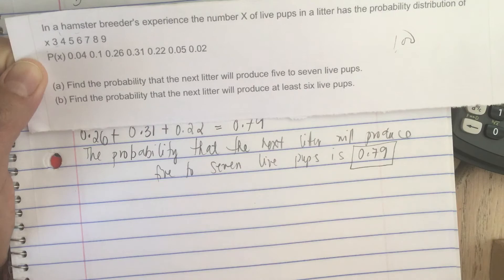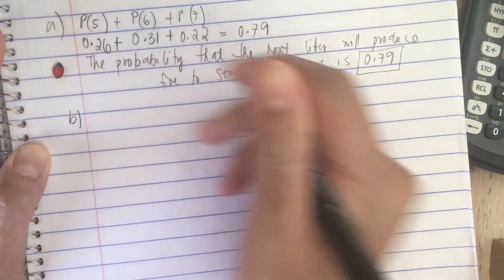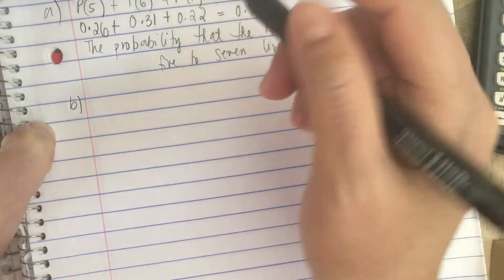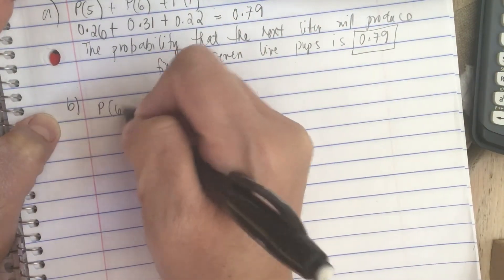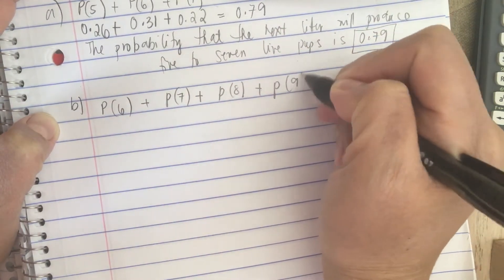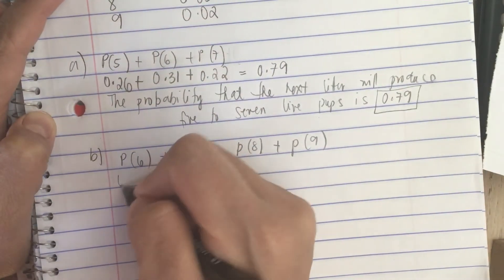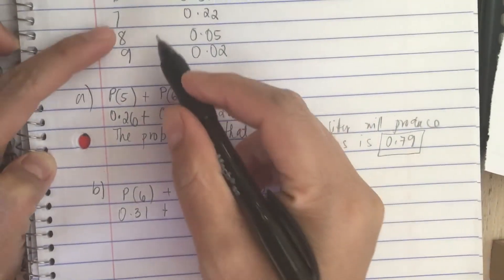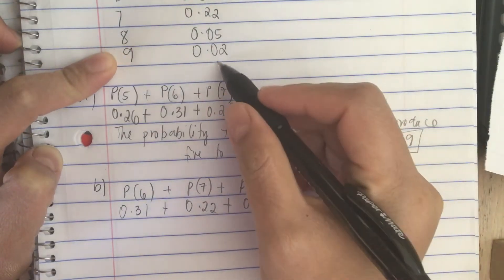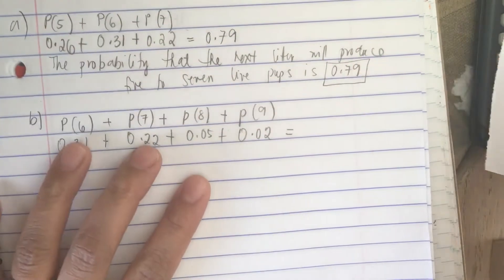Now for Part B: find the probability that the next litter will produce at least 6 live pups. At least 6 means we start with 6, so we calculate P(6) + P(7) + P(8) + P(9). P(6) is 0.31.